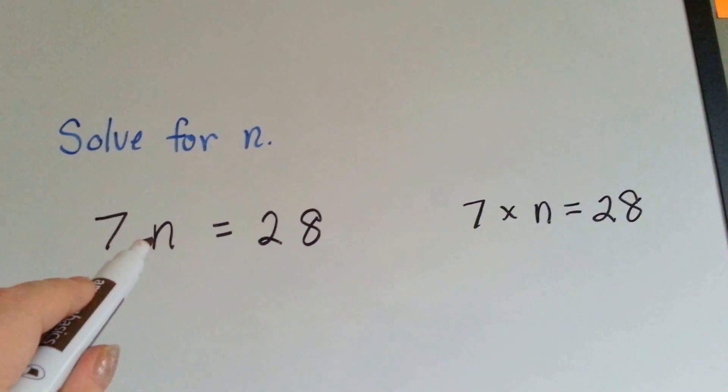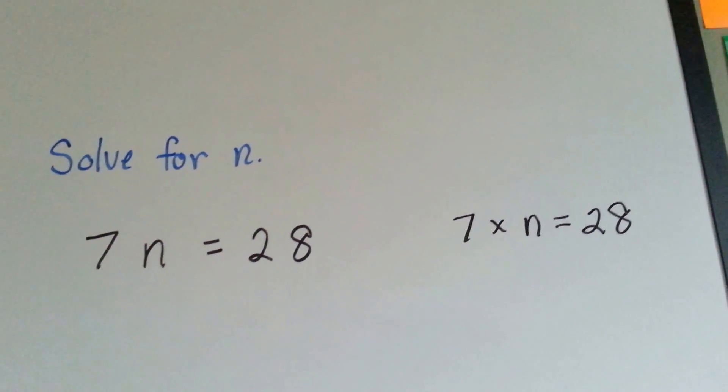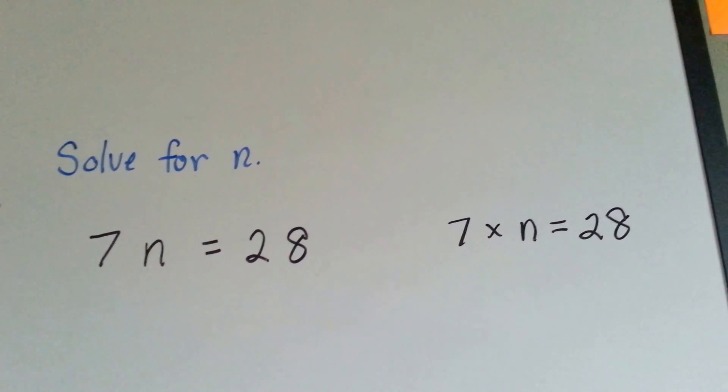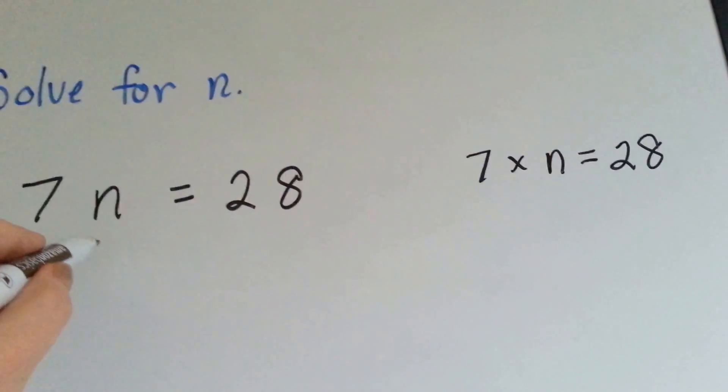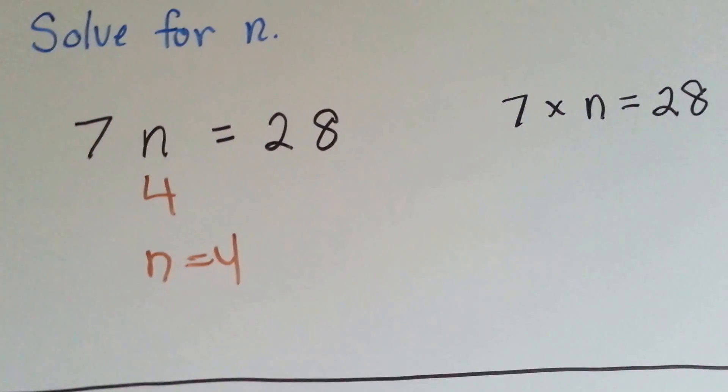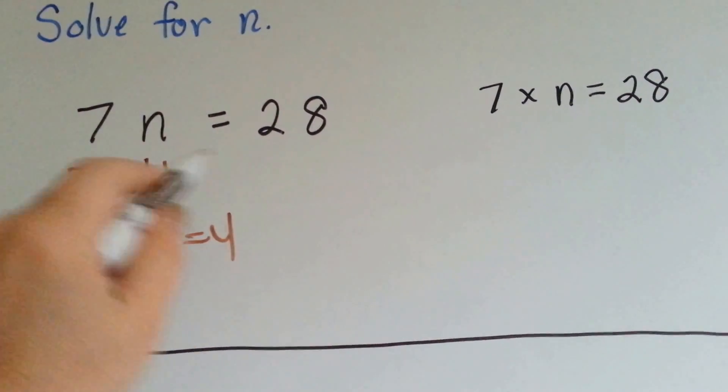Six. Seven times more than n is twenty-eight. Seven times n equals twenty-eight. Seven times what is twenty-eight? Do you know? Seven times four. n equals four. Because seven times four equals twenty-eight.